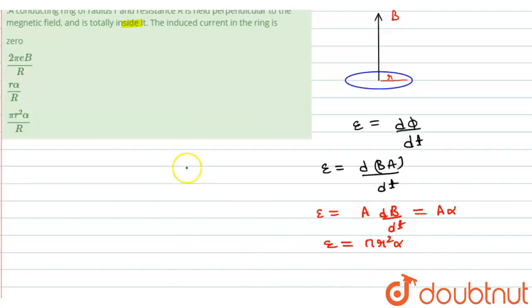We have to find the value of induced current, that means I. I will be equal to induced emf divided by resistance. Induced emf is equal to pi r squared alpha divided by R. So this is the desired result, and the answer of this question is option D.